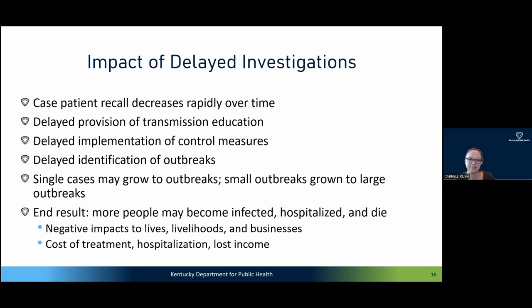The other consequences of delayed investigations include not being able to provide timely education to the person, and not being able to implement control measures in a timely manner — so a food handler might return to work while still infectious. It can also lead to delayed identification of outbreaks. If we don't have the epi information to connect cases and whole genome sequencing takes time, we may not realize cases are connected rather than sporadic. Because of that delay, single cases may grow to outbreaks and small outbreaks may turn into large outbreaks, resulting in more people becoming infected, hospitalized, and potentially dying, which increases the cost of treatment, hospitalization, and lost income.